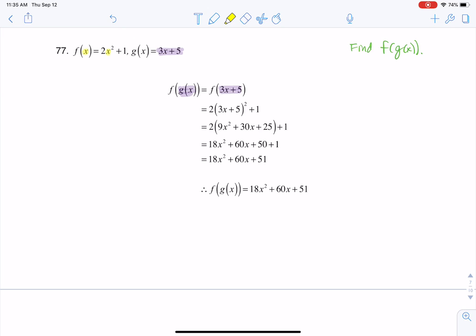So in our case now, I have 3x plus 5 in the parentheses. So you see I square it, multiply it by 2, and then add 1 to it. So that's what we have going on there.